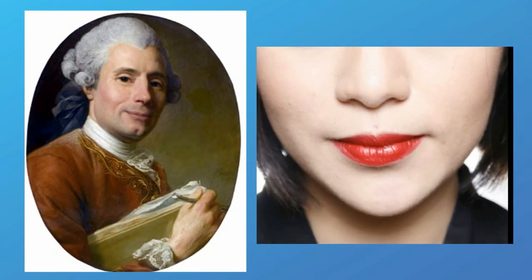The shape of the chin is the trait, and the alleles would be a cleft chin or a smooth chin. The different forms of the trait would be alleles.